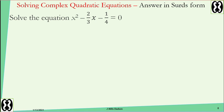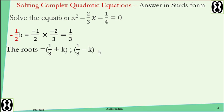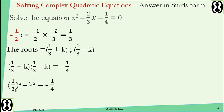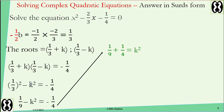Now an example involving fractions in the equation. We can still use this method. Divide the b coefficient, which is negative 2 over 3, by negative 2. That gives one third. Create the root expressions: one third plus k and one third minus k. Multiply the roots and set equal to the constant, negative one over four. Use difference of two squares for the left-hand side: one third squared is one over nine. Add k squared to both sides and add one quarter to both sides.